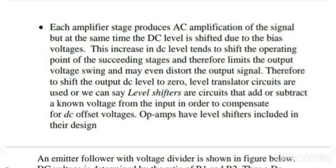Each amplifier stage produces AC amplification of the signal, but at the same time the DC level is shifted due to the bias voltages. This increase in DC level tends to shift the operating point of transistors of the succeeding stages, and therefore limits the output voltage swing and may even distort the output signal.